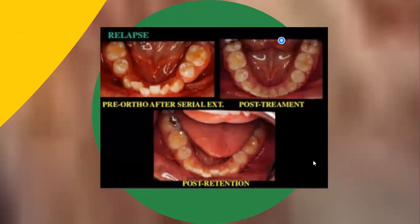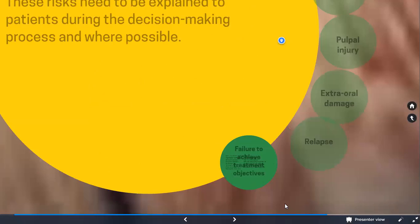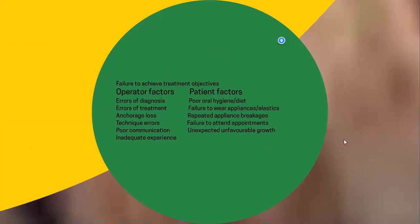Relapse is the return of the original features of the malocclusion caused by gingival and elastic fibers or by bone. There can also be soft tissue pressures from changes in bone position or age-related changes that lead to slight changes in tooth position. We now include age-related changes under the definition of relapse. The current definition of relapse is any change in the position of the tooth after orthodontic treatment. After orthodontic treatment, if you see some return of the original malocclusion features, these are the possible issues of orthodontic treatment.